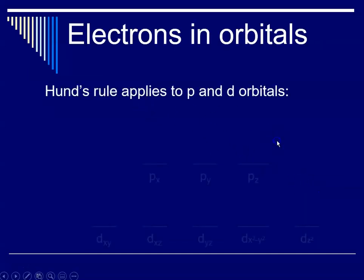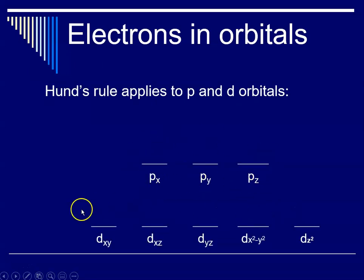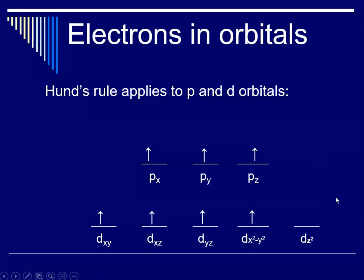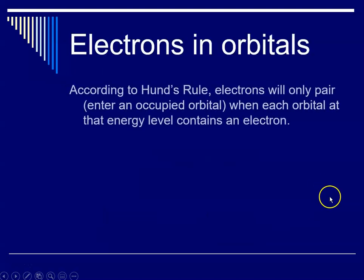Here are the three P orbitals and the five D orbitals. If I had three electrons to fill into the P sublevel, I'd put one in each orbital with parallel spin before pairing them up — I can't put two in one and one in another. The electrons behave like children who want their own room until forced to share. According to Hund's rule, they only pair up and enter an occupied orbital when each orbital at that energy level already contains one electron.